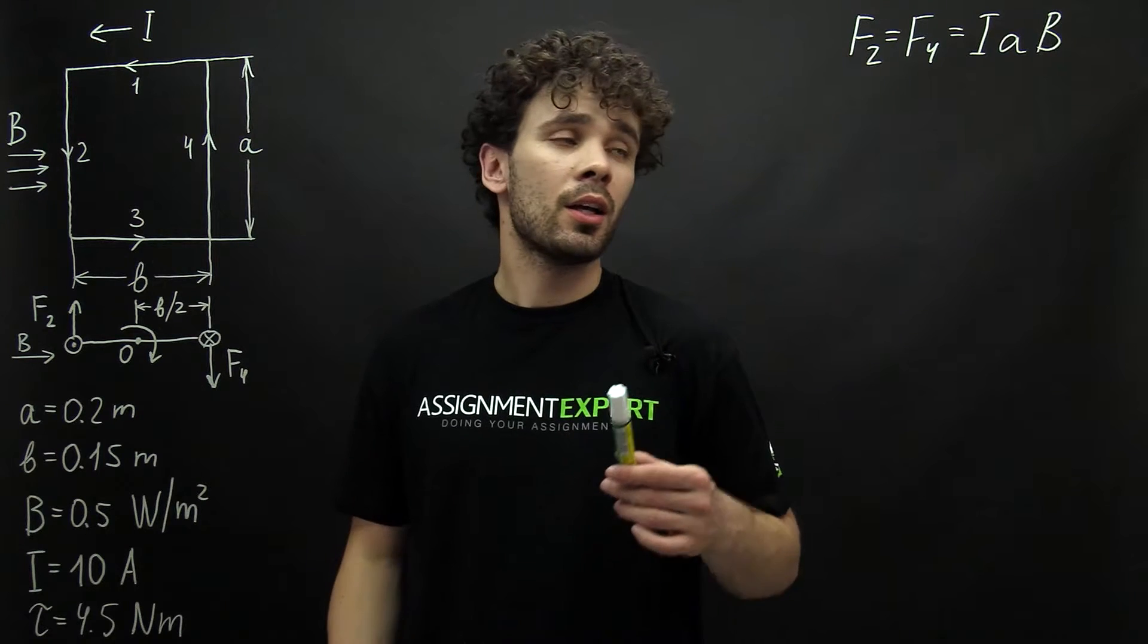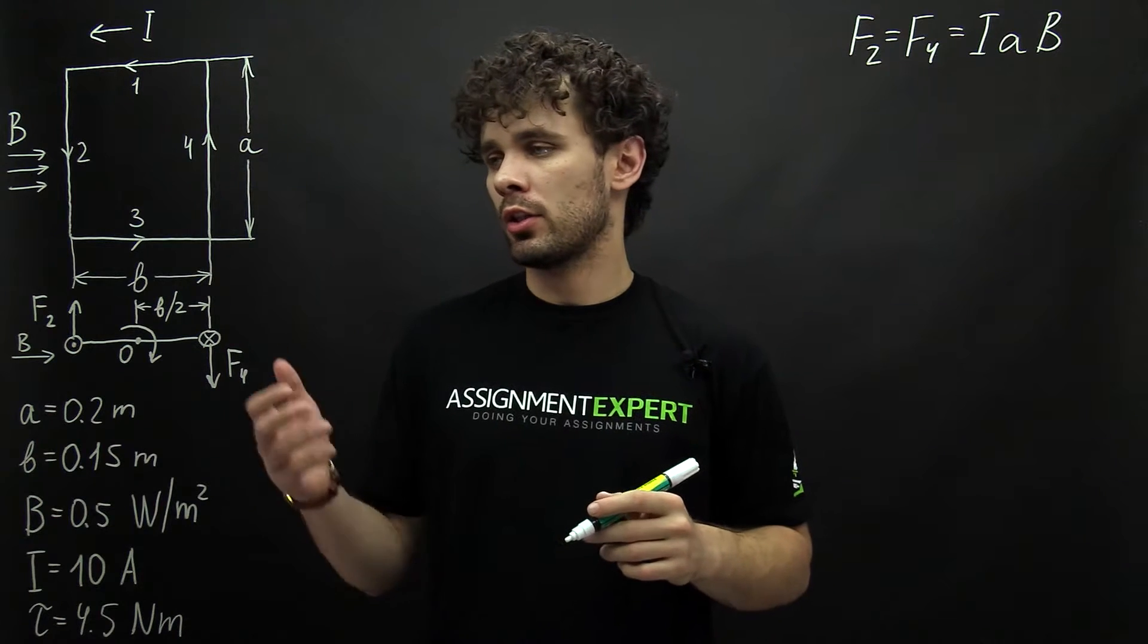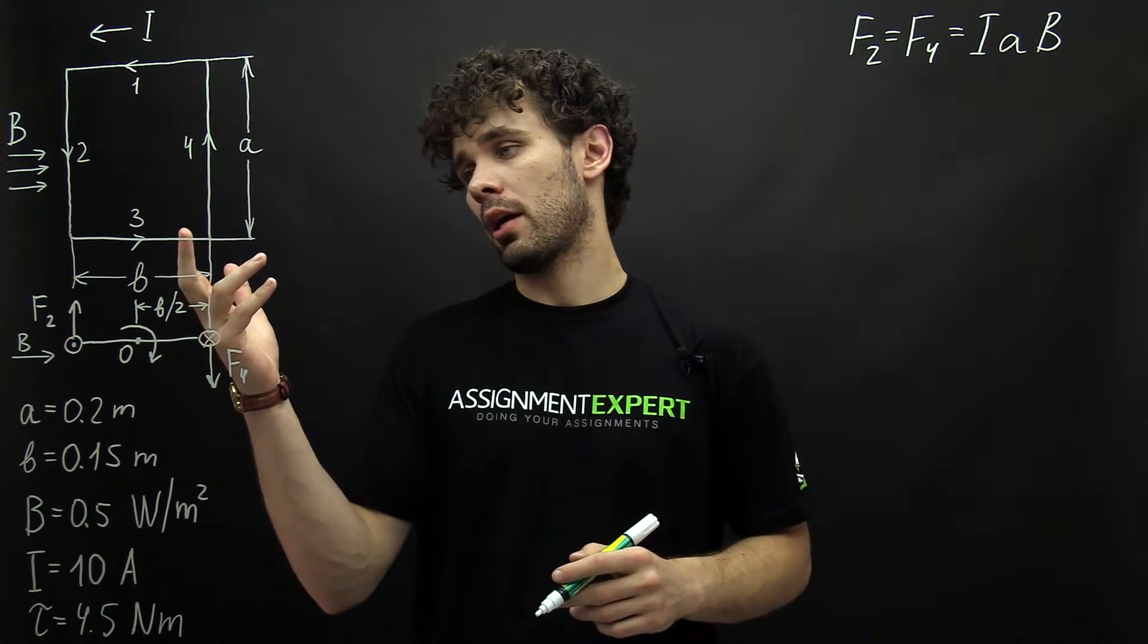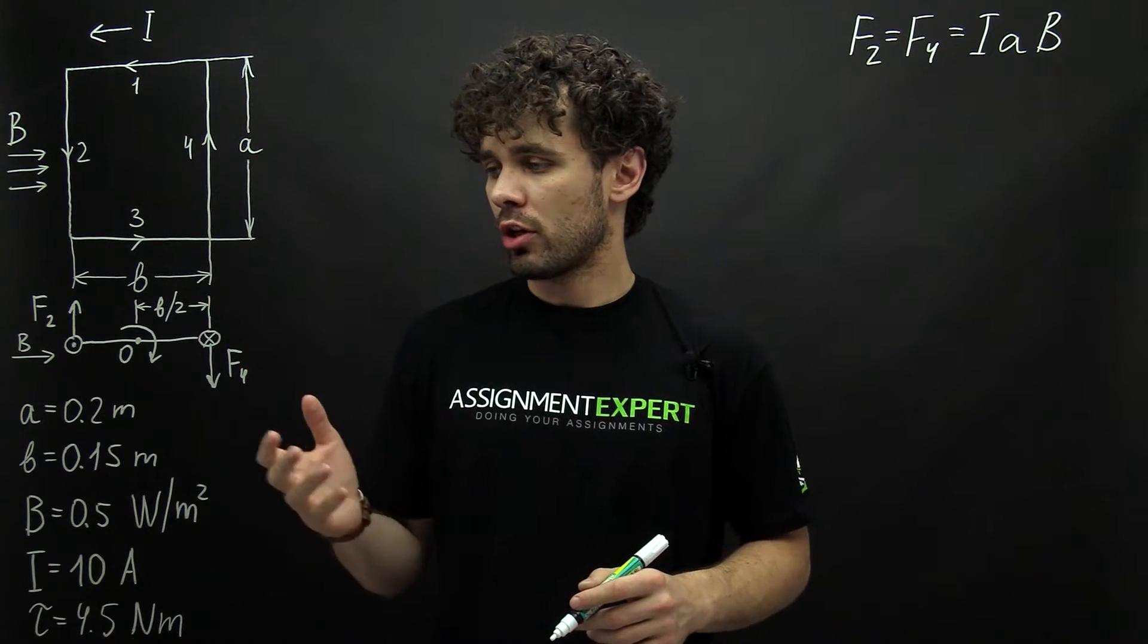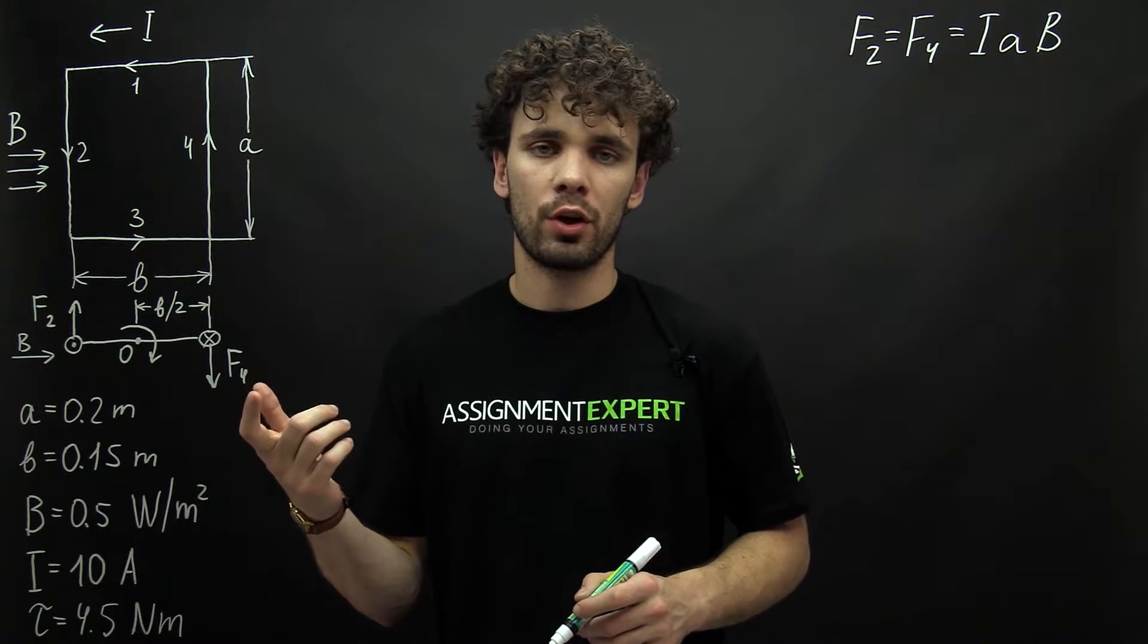Alright, so we found the forces F2 and F4. Now if we will look at the loop of this coil from side 3, the forces will be directed as shown over here. F2 is upwards and F4 is downwards.